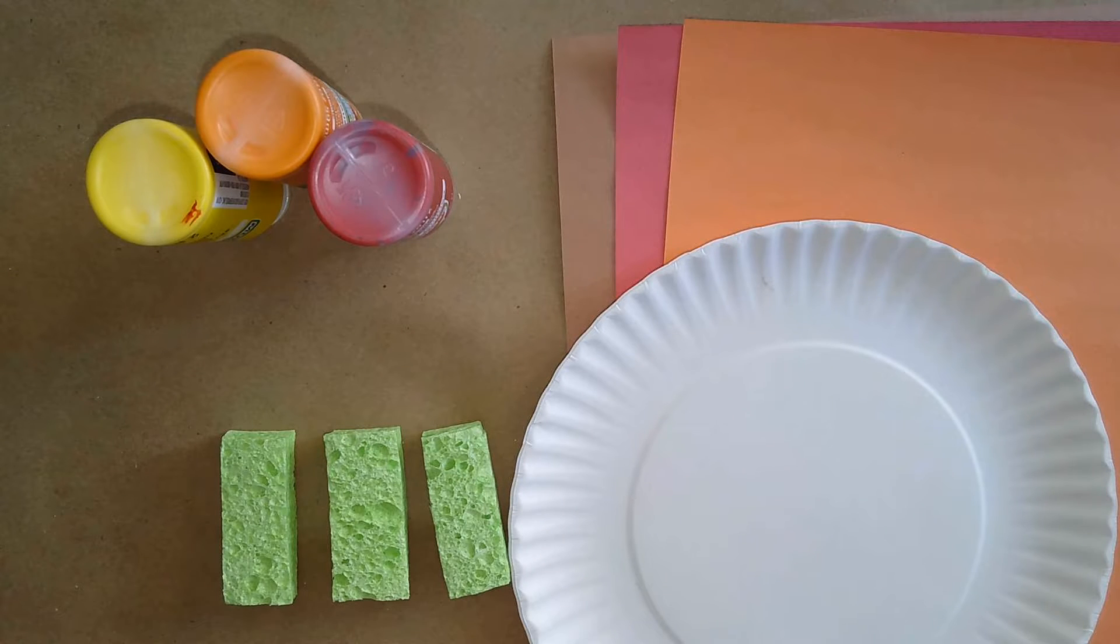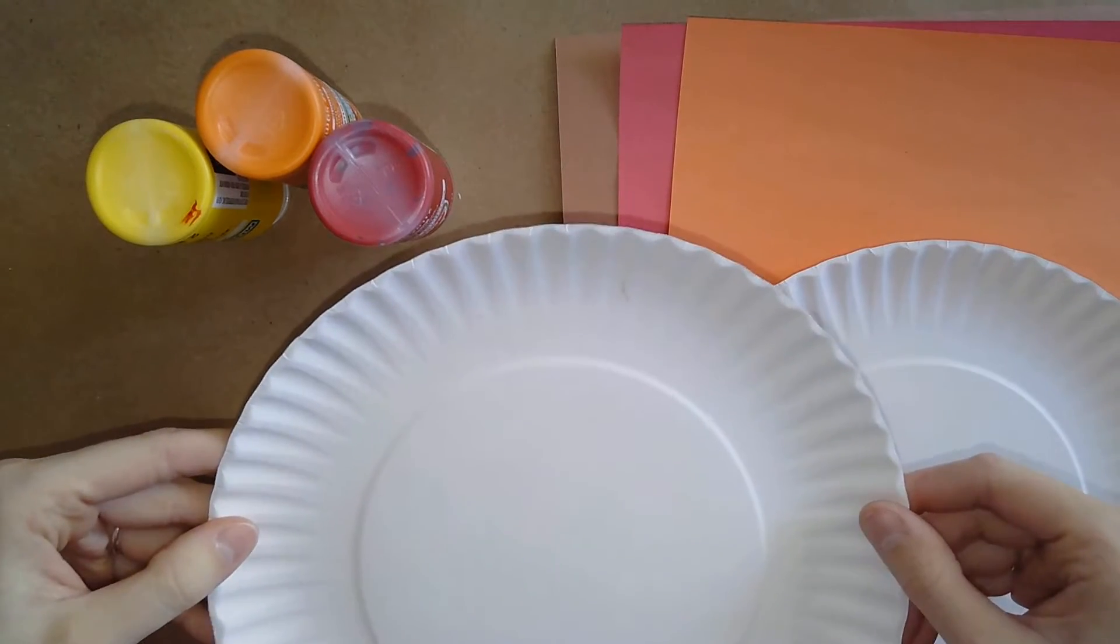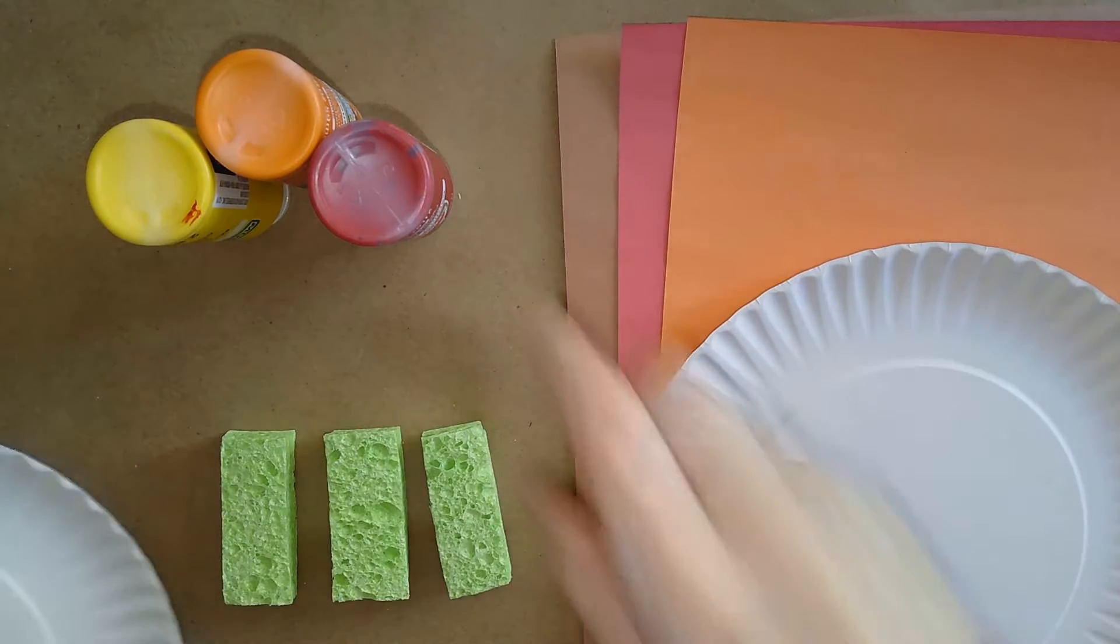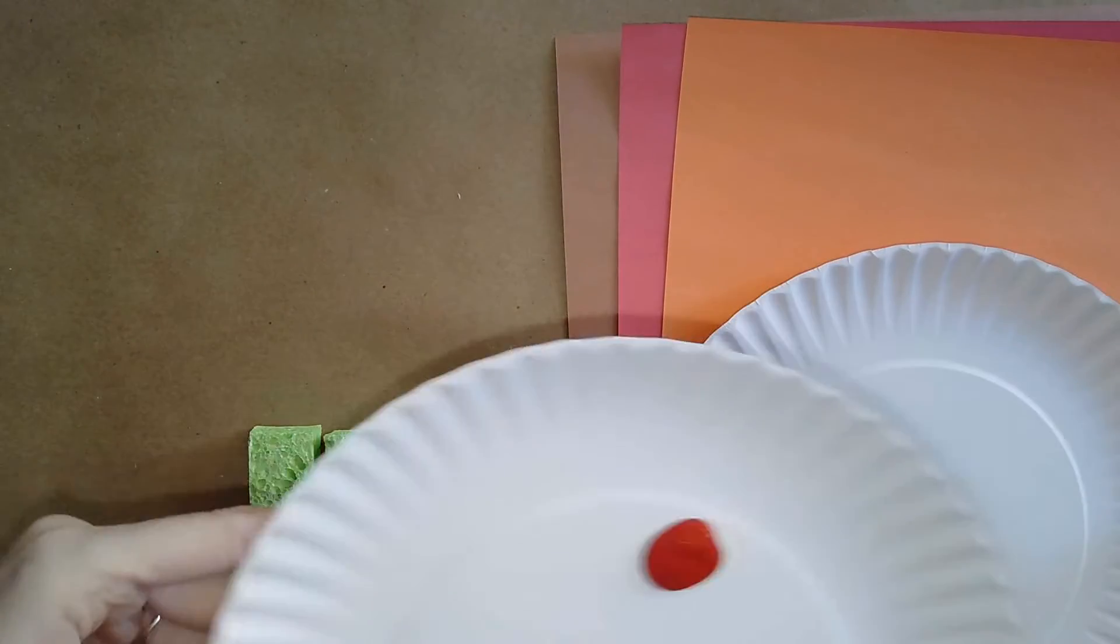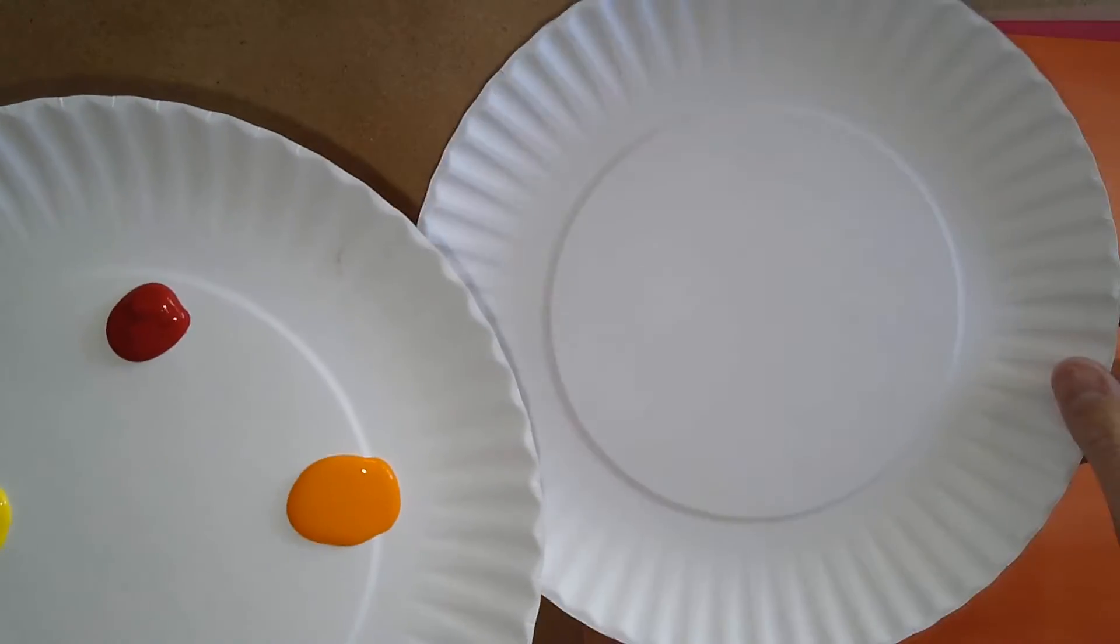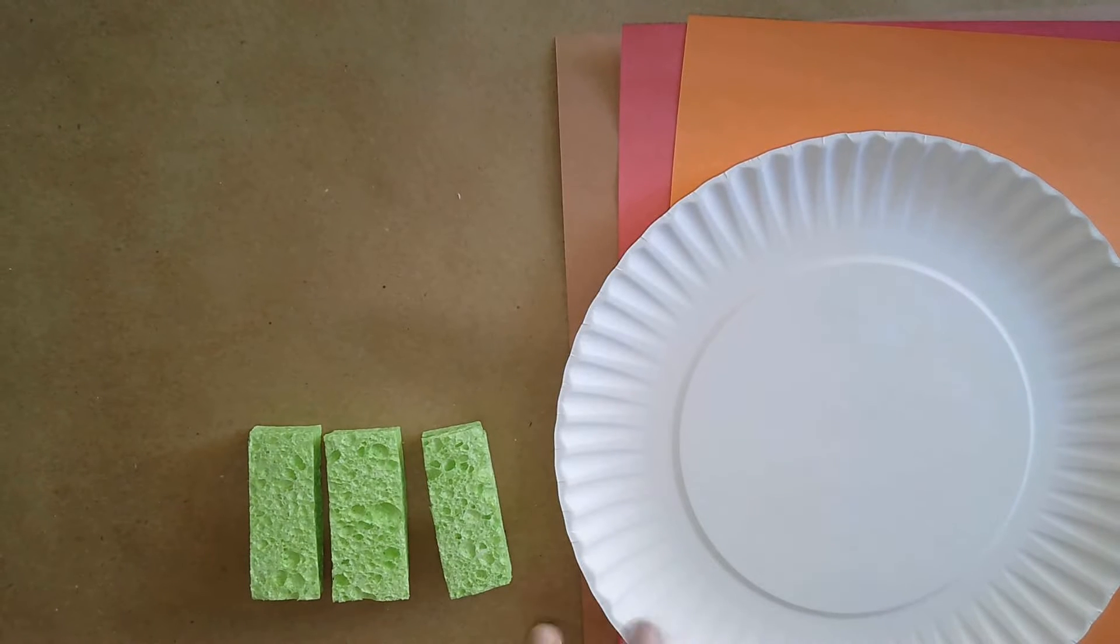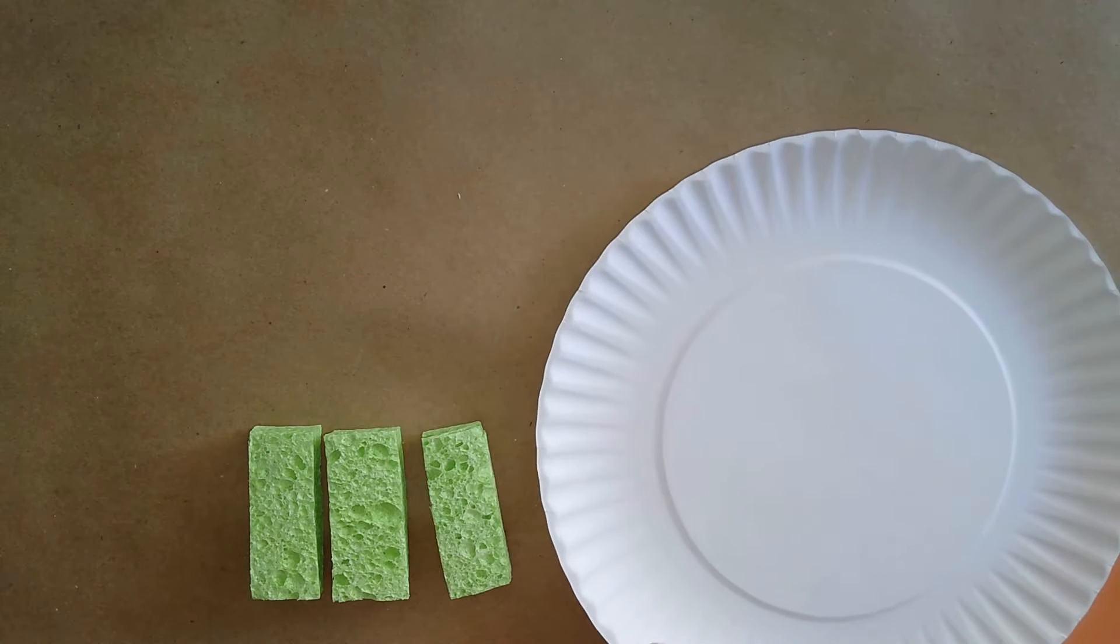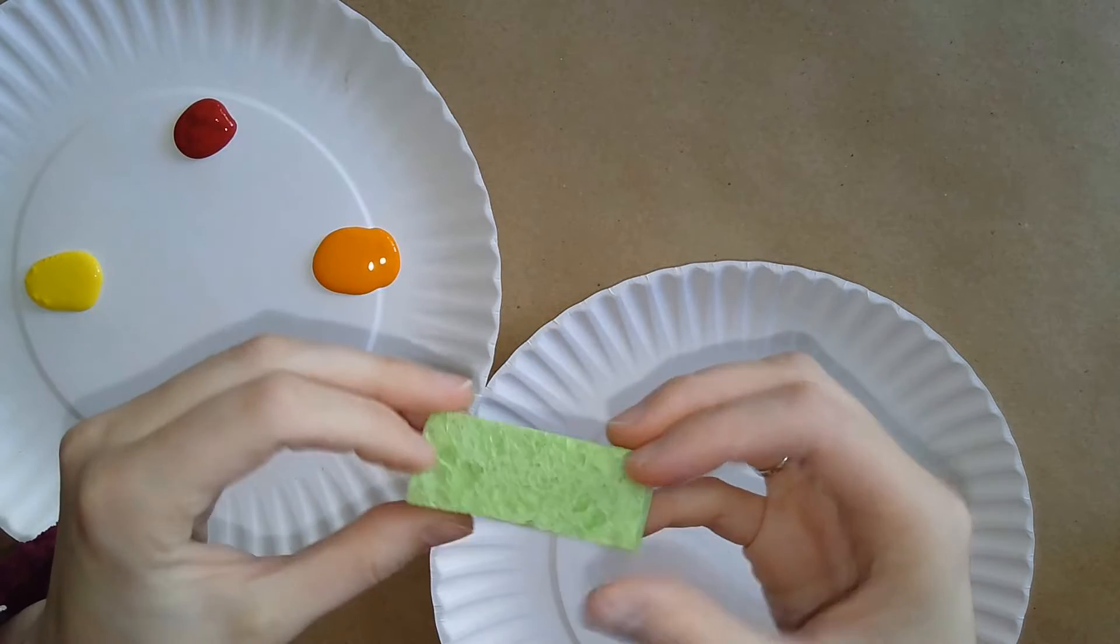And the next step will be to take one of your paper plates and put a little bit of each color of paint you're going to use on the plate. Now you're going to take your pieces of sponge and use those sponges to dab some paint on your other paper plate. I'm going to put this construction paper aside for now.